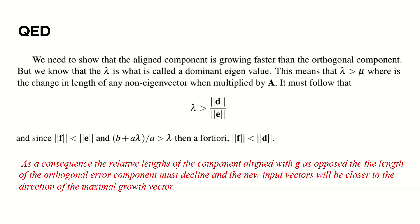It implies, necessarily, that the length of the new error vector F is less than the length of the old error vector D. As a consequence, the relative length of the component aligned with G, as opposed to the length of the orthogonal error component, declines. And the new input vector will be closer to the maximal growth vector of the economy.